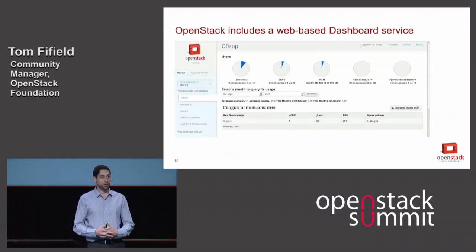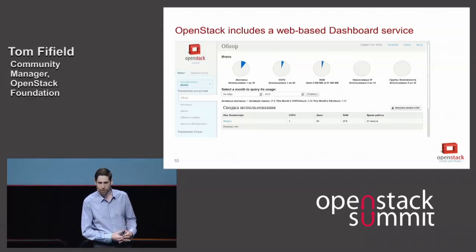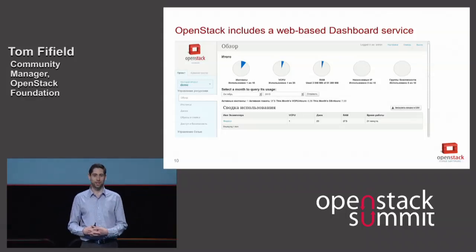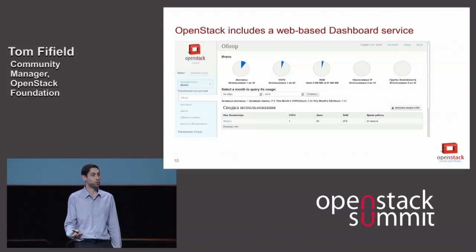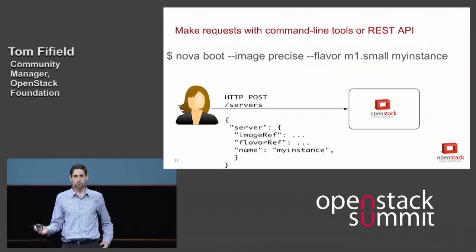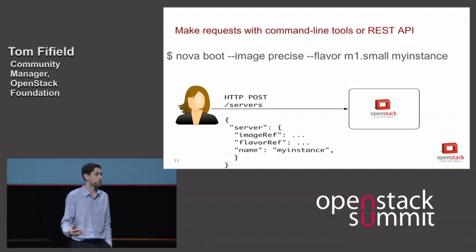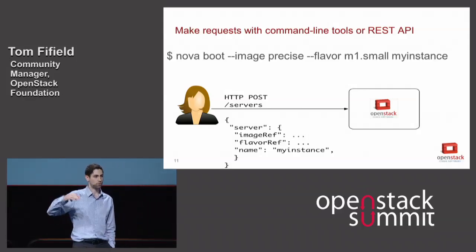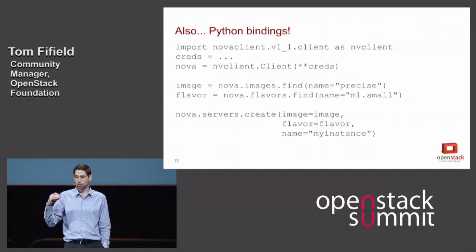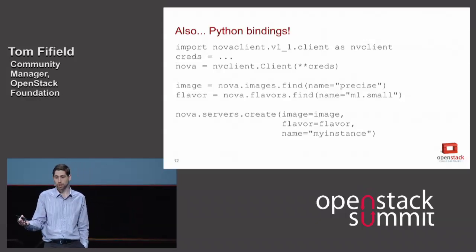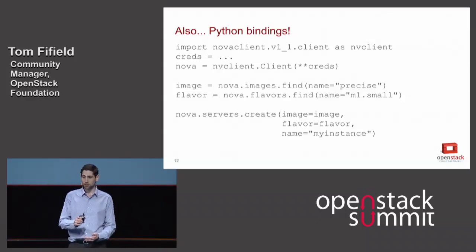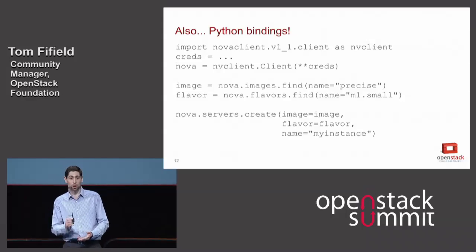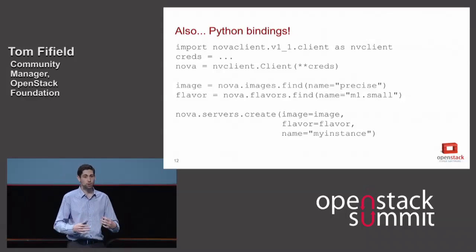We've made quite a few advances with the dashboard recently. If you're a software engineer interested in building cloud applications, you'll be interested in the API. Here's an example of booting a server on the command line and what it converts to in a POST request. There are bindings available for Python — very good since OpenStack is written in Python — but also projects for Java, Node.js, Ruby, .NET, pure JavaScript, Perl, PHP, and Go. If you're coding applications in any language, you can make them use cloud APIs.